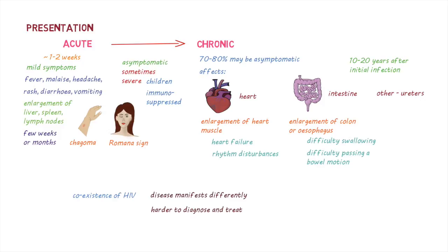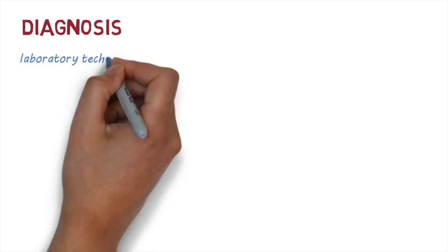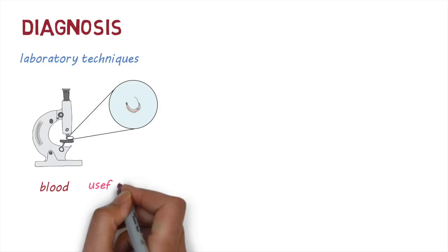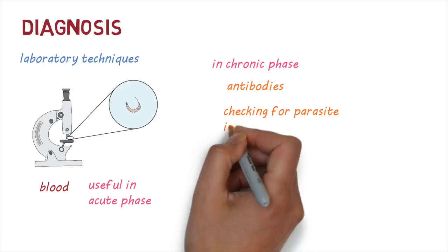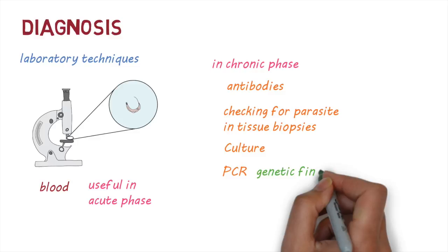Chagas disease is diagnosed by laboratory techniques. The most common method is by detecting the parasite in the blood using microscopy, and is useful for the acute phase of the disease. Because there are very few parasites in the blood in the chronic stage, other techniques such as checking for antibodies in the blood or detecting the parasites in tissue biopsies is more useful. Other methods include culture and PCR, which detects the genetic fingerprint of the parasite.